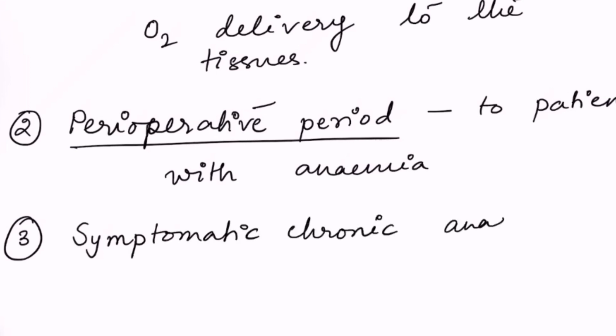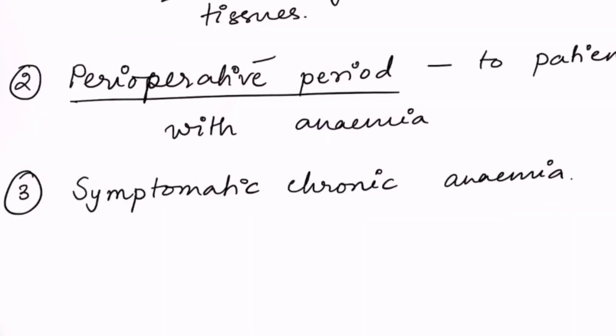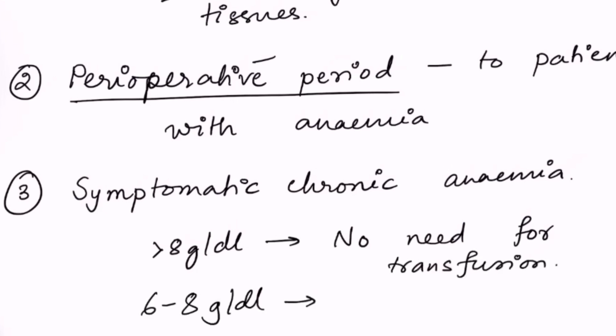Third indication of blood transfusion are patients who have symptomatic chronic anemia. Now you have to know how much level of hemoglobin is in the blood and how much blood we need to transfuse. If the patient is having more than 8 grams per deciliter of hemoglobin, no need to go for blood transfusion.